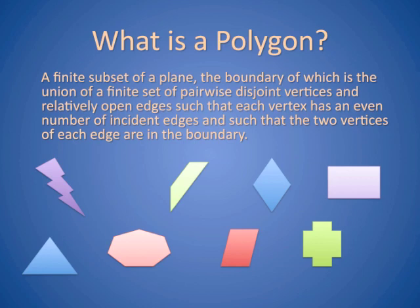A polygon is a finite subset of a plane, the boundary of which is the union of a finite set of pairwise disjoint vertices and relatively open edges such that each vertex has an even number of incident edges and such that the two vertices of each edge are in the boundary.